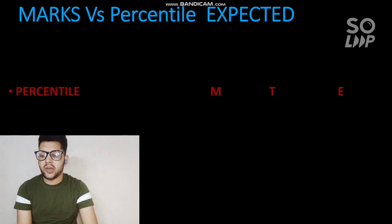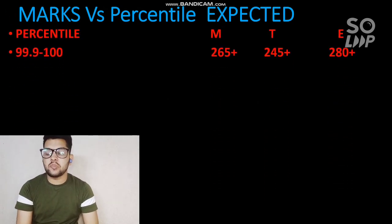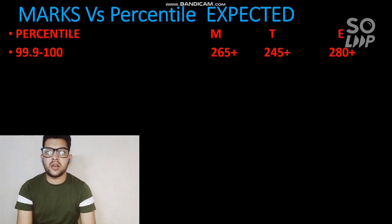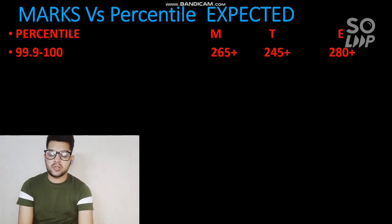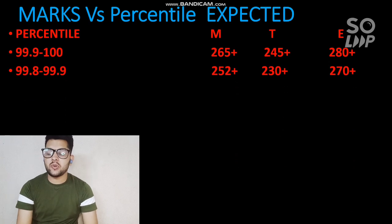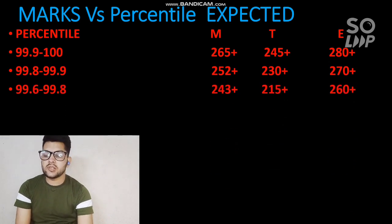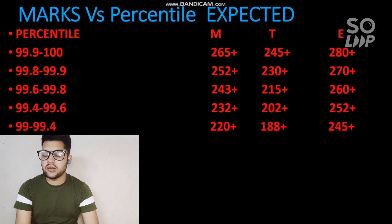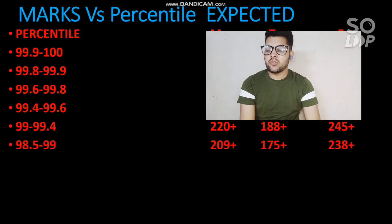Here are the expected marks versus percentile for all types of paper. For 99 to 100 percentile, moderate paper requires at least 265 marks (possibly 270), tough paper 255 plus, and easy paper 280 to 290 plus. For 99.8 to 99.9 percentile, marks would be 252 plus for moderate. For 99.6 to 99.8, marks would be 243 plus for moderate. For 99.4 to 99.6, marks would be 230 to 232 plus. For 99.2 to 99.4, marks would be 209 plus for moderate paper.